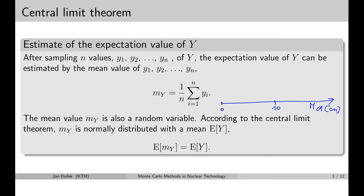Now when you repeat the same simulation but use different random numbers — which you can ensure by choosing a different seed for the random number generator — you start a sequence of random numbers with a different seed and get a different sequence. With a different sequence of random numbers you will collect slightly different samples, and you will not get 10 centimeters for the mean value of the distance, but something a little bit different, for instance 10.5 centimeters.